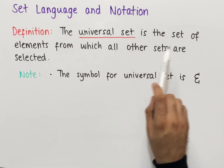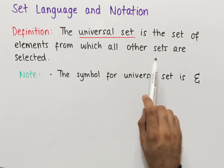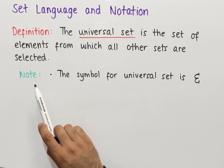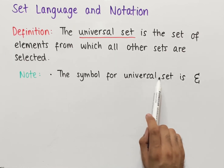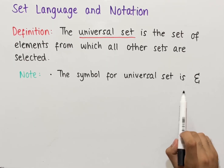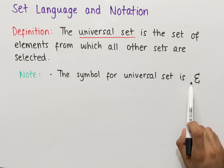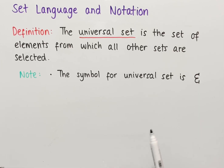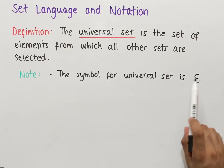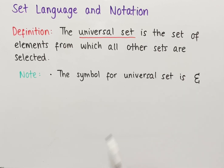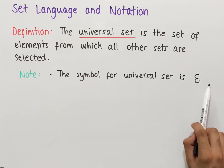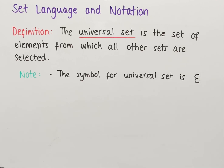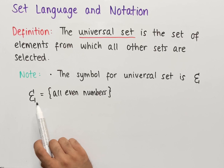The universal set is the set of elements from which all other sets are selected. The symbol for the universal set is a special E-shape — this is not the same as the epsilon symbol for 'element of.' You might also see different notation such as a capital U or capital V, but the E-shape symbol is the most common.